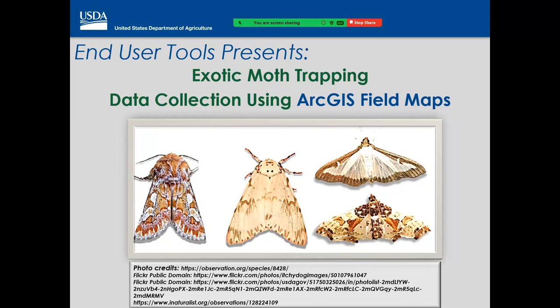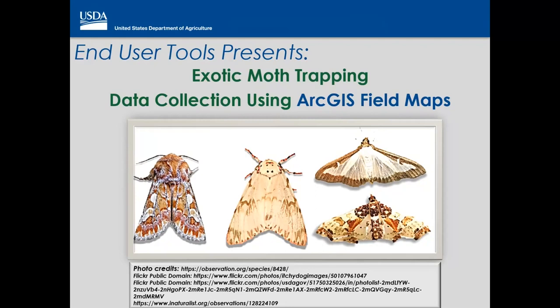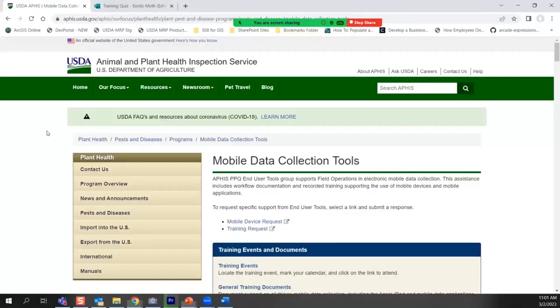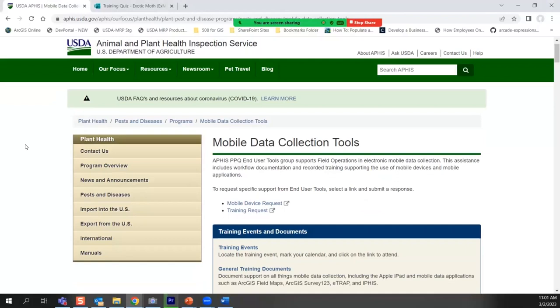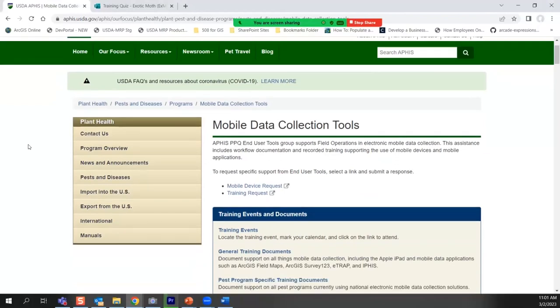Let's dive into these two links I've placed in the meeting chat. If folks join later they won't see them, so I'm going to try to remember to add them again at the end of training. These two links are really important resources. The first one is the Mobile Data Collection Tools page, where you'll find all kinds of training support. It is a public APHIS website, meaning state cooperators can find this as well — publicly accessible from any web browser.